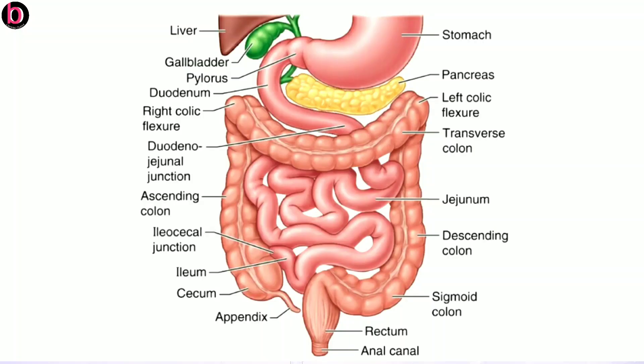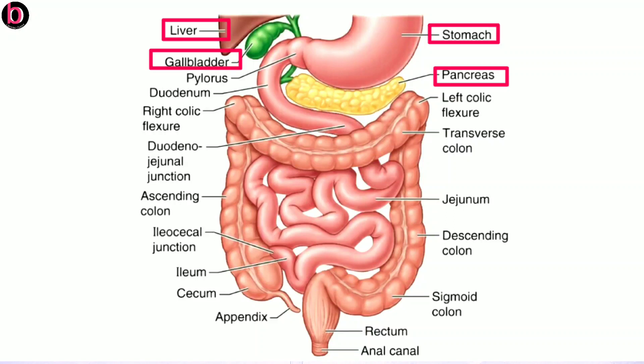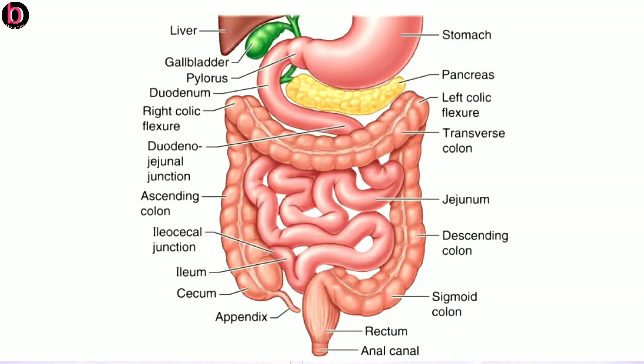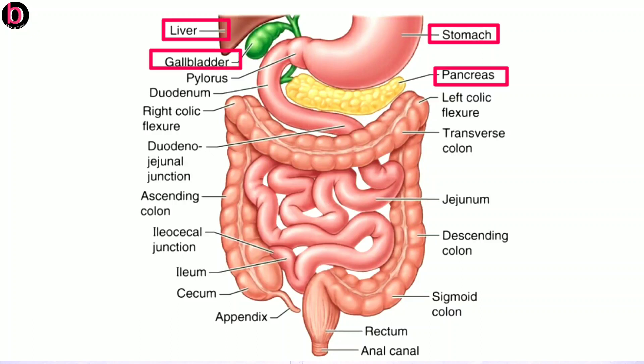Hello friends, in this video lecture we are going to discuss about the last two parts of the alimentary canal, that is the small and large intestine. In the diagram you can see the stomach, a smaller portion of liver, gallbladder, pancreas, and the whole of the intestine including small and large intestine.